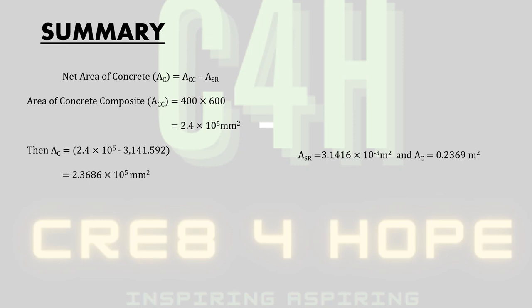We've now calculated the total area for the steel reinforcement in the concrete composite and the net area of the concrete itself. All that we have to do moving forward is to substitute all known values into the equation that relates to the weight limit for the concrete composite column.